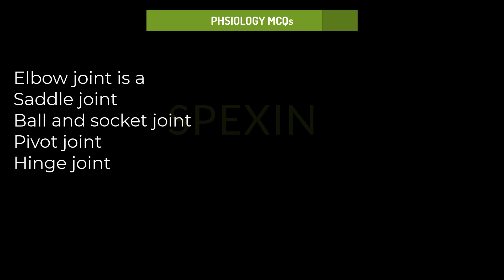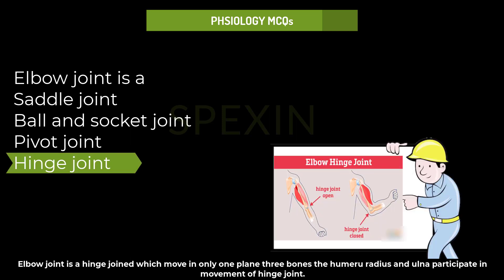Elbow joint is a: saddle joint, ball and socket joint, pivot joint, or hinge joint? Elbow joint is a hinge joint, which moves in only one plane. Three bones — the humerus, ulna, and radius — participate in the movement of the hinge joint.